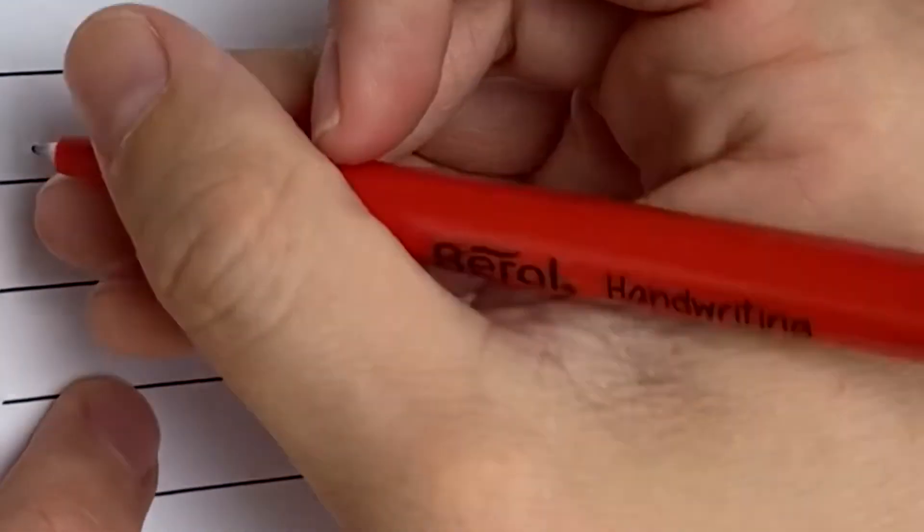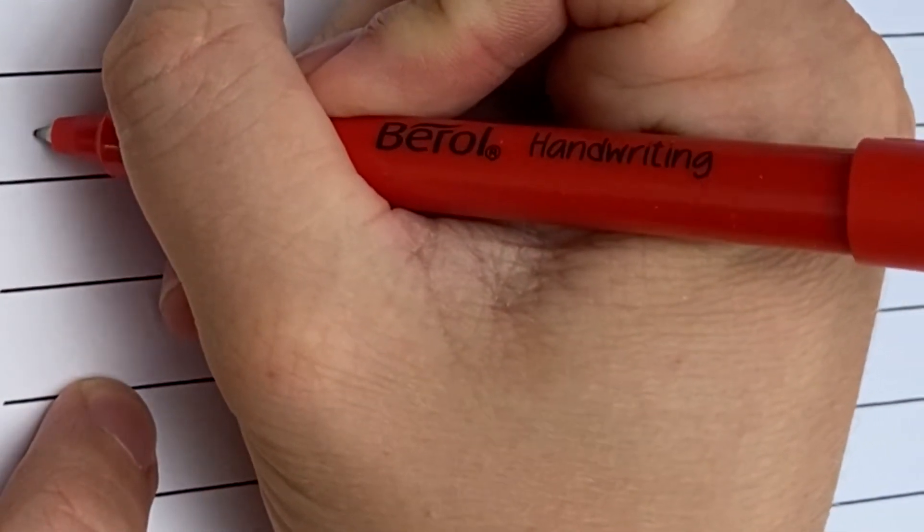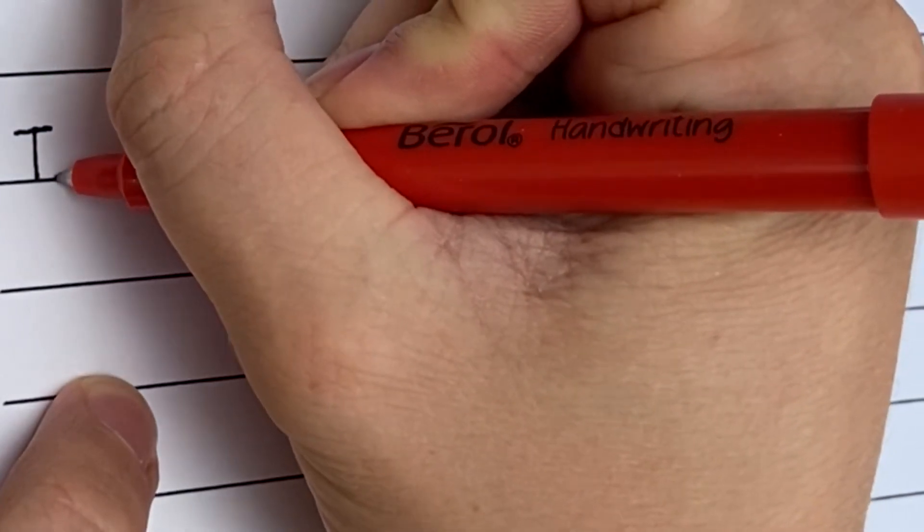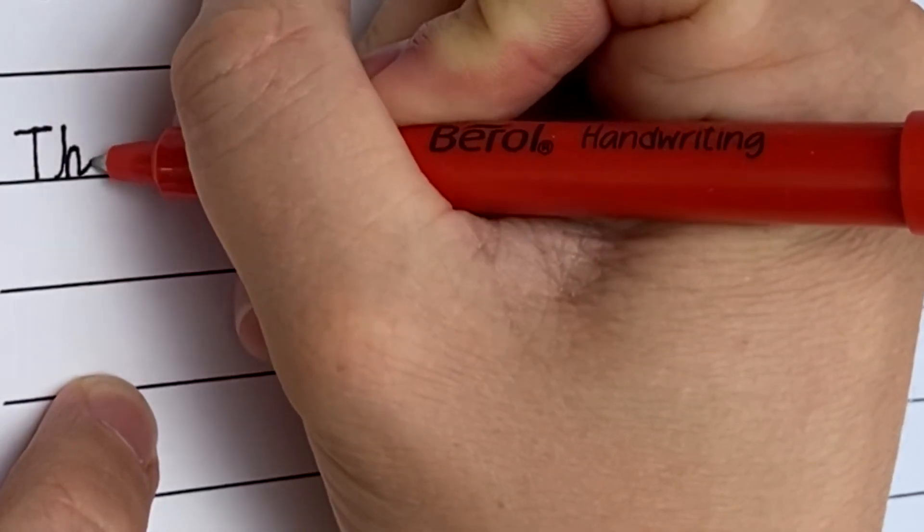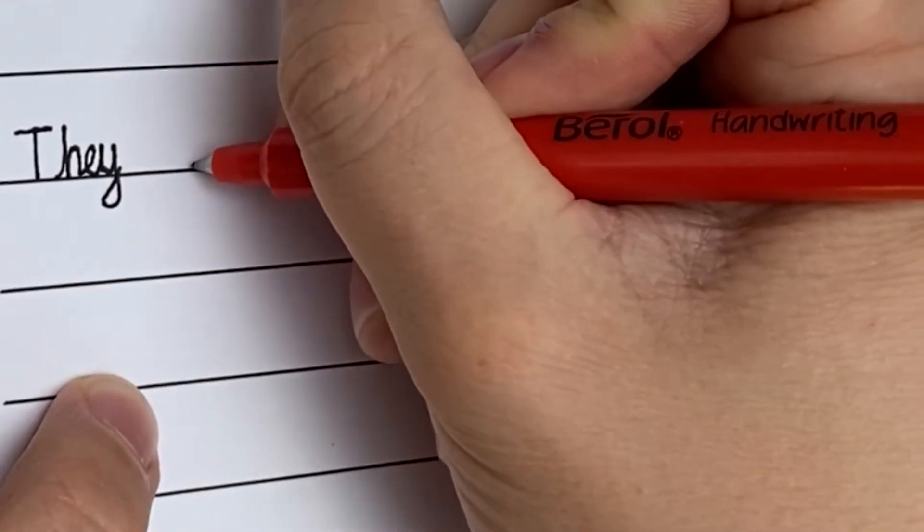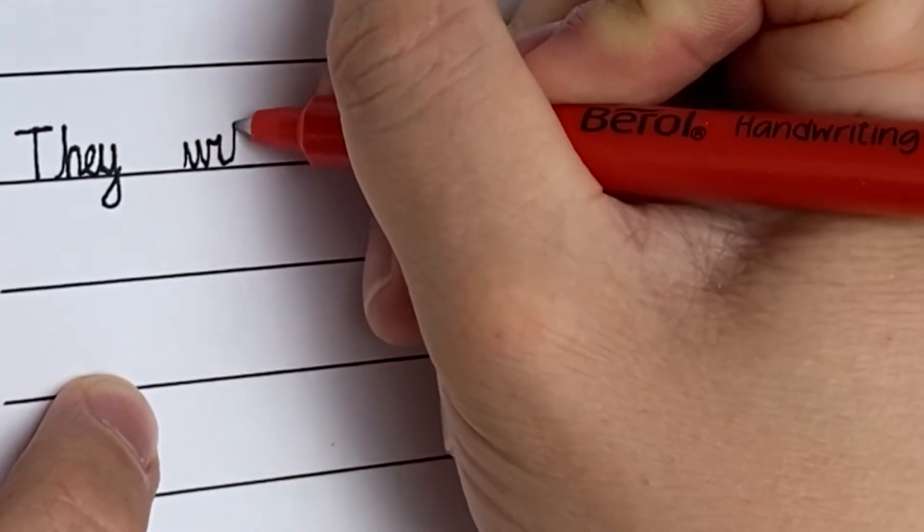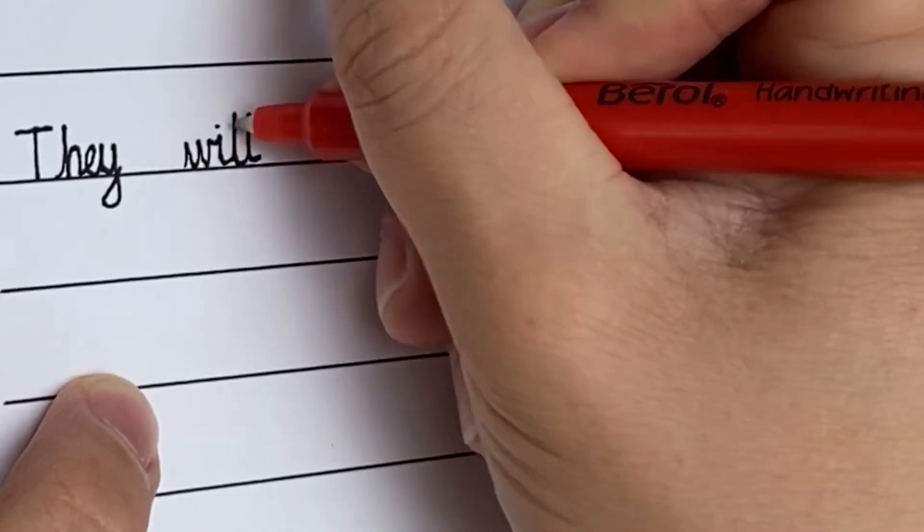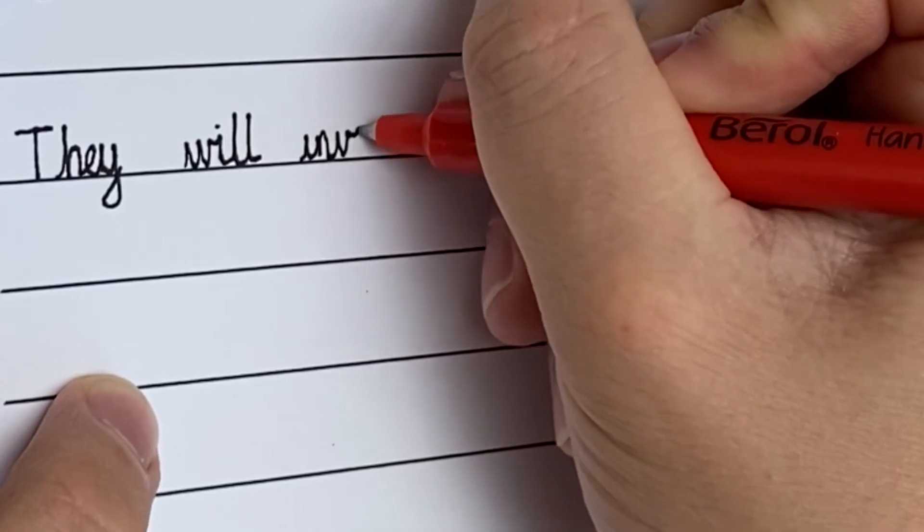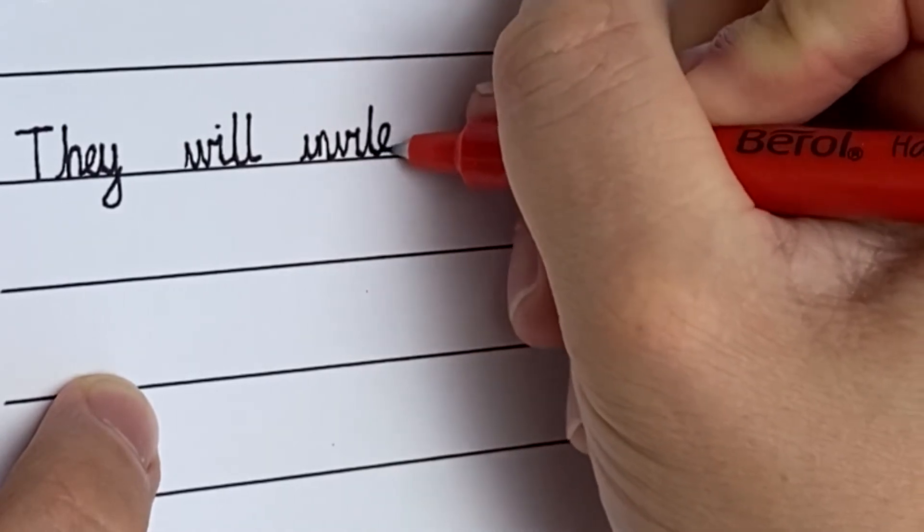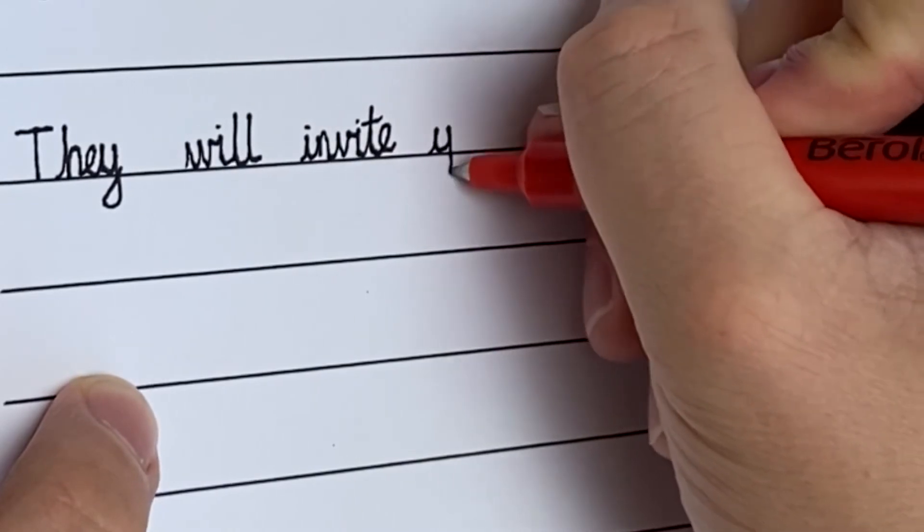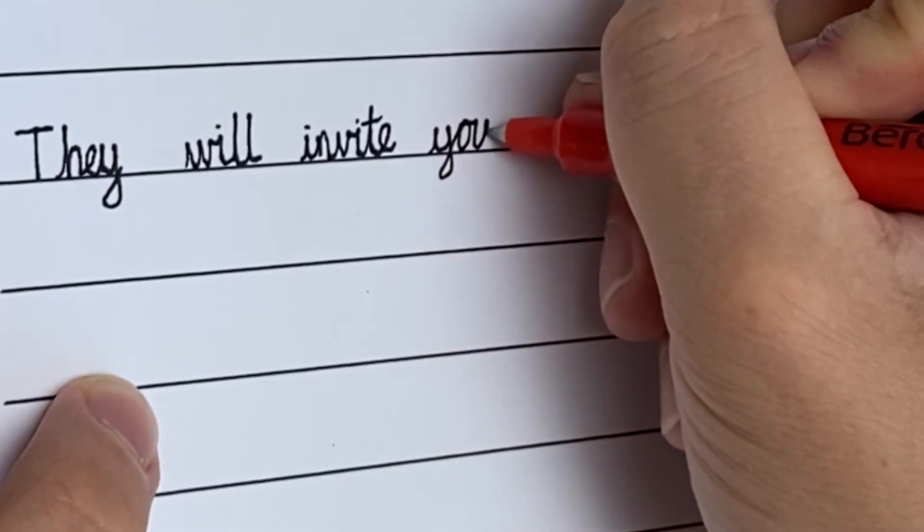OK, stage four is to experiment with our writing, to write it in a sentence. And the sentence we're going to write is, they will invite you. I had to change my pen because the other pen has run out. So I'm not sure how well this one's going to write, but give it a go. So there we go. They will, getting those Ls nice and high, will invite you. With that letter Y, start on the line, go up, down, around, up, down, under, loop, hook into that letter O.